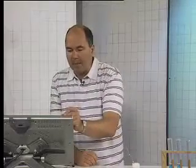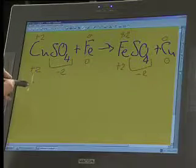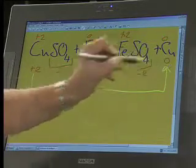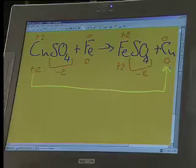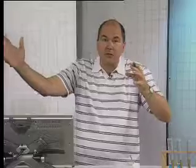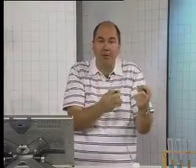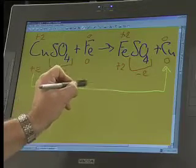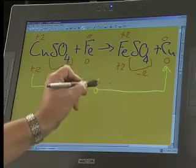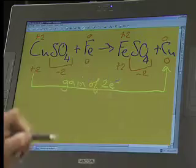Copper started at life as plus two, and look what has happened to it. It ends life as zero. So it started at plus two, and it's gone to zero. What's happened? It was electron poor, plus two. It didn't have enough electrons. It was positively charged. In the process, it has undergone a gain of electrons. Because it was plus two, it's now zero. It's gained two electrons.